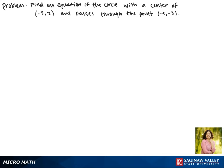Today we'll be finding an equation of the circle with a center of negative 5, 2, which passes through the point negative 5, negative 3.